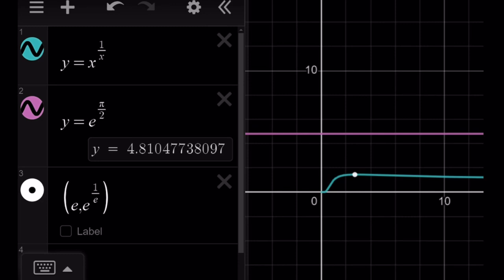And why did I mark that point e comma e to the power 1 over e? That is where our function x to the power 1 over x has a maximum. So that's basically the largest value for our function. And it just happens to be less than e to the power pi over 2. Therefore, these two curves do not intersect. That means there are no real solutions. But that doesn't mean there are no solutions, because we could still look for non-real solutions.